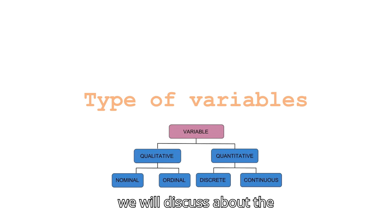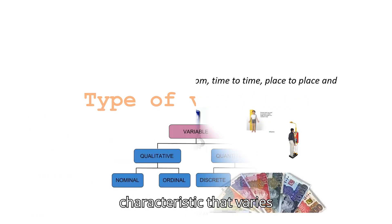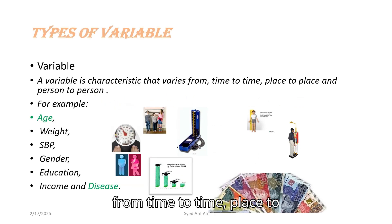Now we will discuss variables and types of variables. A variable is a characteristic that varies from time to time, place to place, and person to person. For example: age of students, weight of a girl, systolic blood pressure of a patient, gender of a group, and educational status of faculty members, income, and diseases.